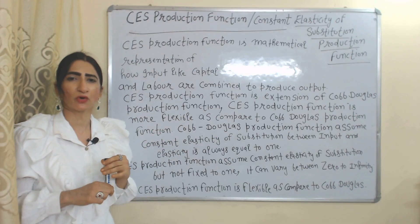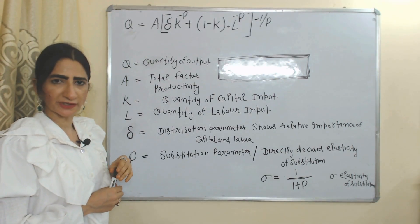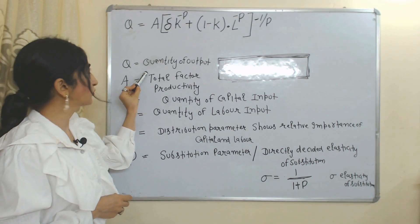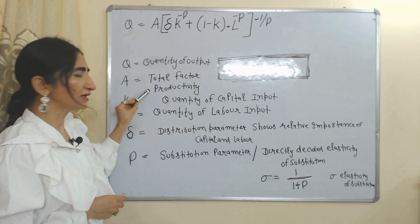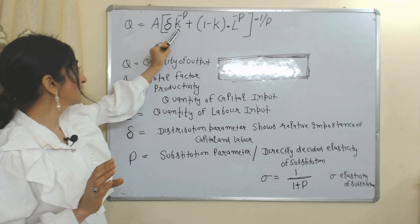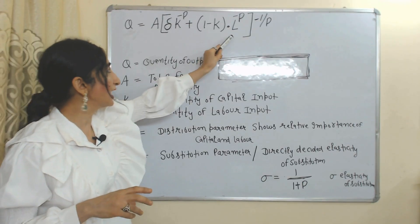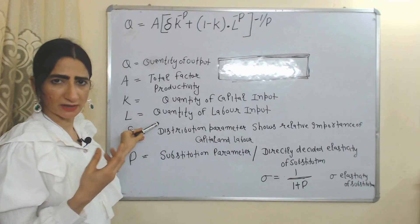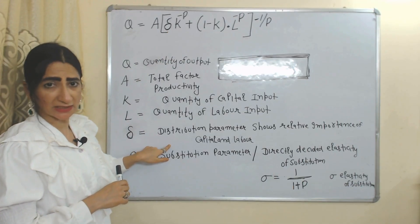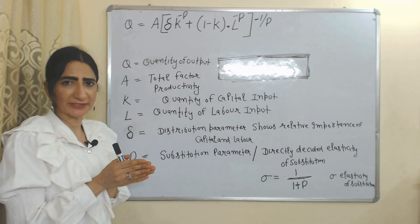This is the equation of the CES production function. In this equation, Q represents quantity of output, A represents total factor productivity, K represents quantity of capital input, L represents quantity of labor input, and delta is the distribution parameter, which shows the relative importance of capital and labor.